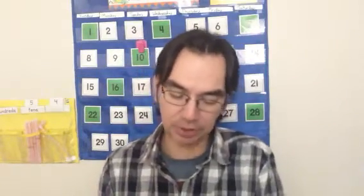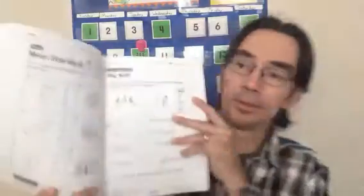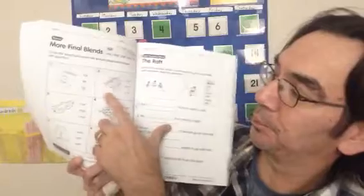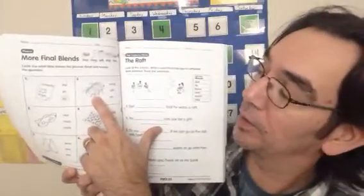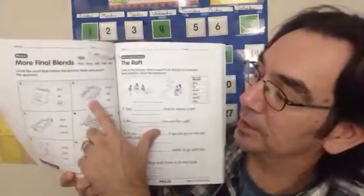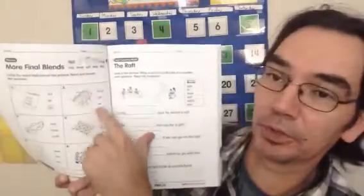And finally, one last one for us to do — this is just circling whatever the picture is and choosing the correct word. That's it, just these ones. All right, boys and girls, I know that was a long one. Thank you very much for working so hard. Thank you for being here — I'll talk to you very soon. Bye bye!